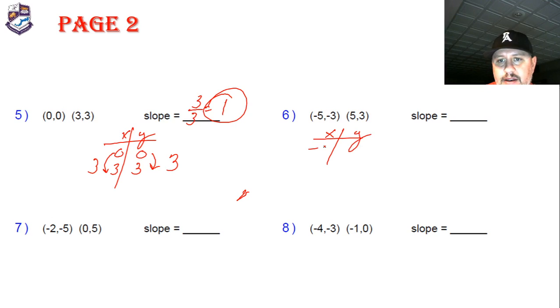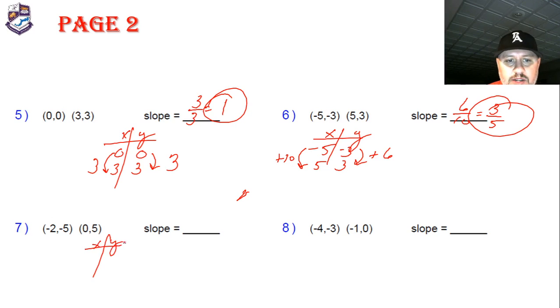Next one, here we go. x-y, negative 5 negative 3, 5, 3. My rise I'm increasing by 6, my run I'm increasing by 10. 6 tenths simplifies to 3 fifths. 3 fifths is my slope.